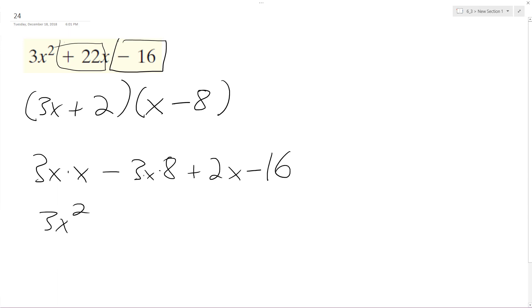This ends up being 3x² and then negative 24x. You know what, this needs to be a positive x. This needs to be a negative 2. Alright, so 3x...